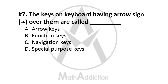Question No. 7: The keys on a keyboard having an arrow sign on them are called — what are those keys called? Option A: Arrow keys, Option B: Function keys, Option C: Navigation keys, Option D: Special purpose keys. The right answer is Option C — Navigation keys. These keys are used to move up, down, left, and right within any document.